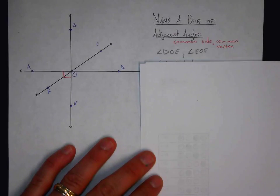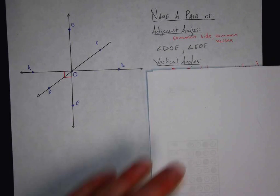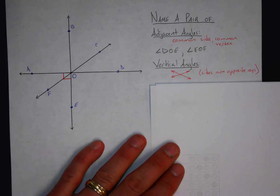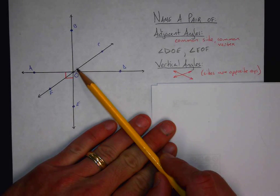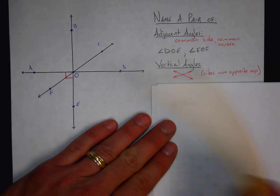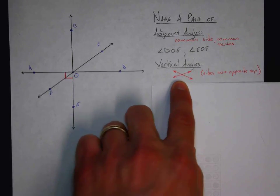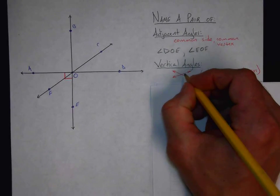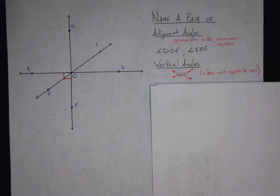The next vocab term is extremely important, because these are so much fun to work with. These are called vertical angles. By definition, vertical angles have sides that are opposite rays. So if you remember what an opposite ray is, they make a straight line. For example, ray OC and ray OF are opposite rays. Ray OD and ray OA are opposite rays. So vertical angles have sides that are opposite rays. I draw a little X to help me remember vertical angles — this angle and this angle are vertical angles, and this angle and this angle are vertical angles.